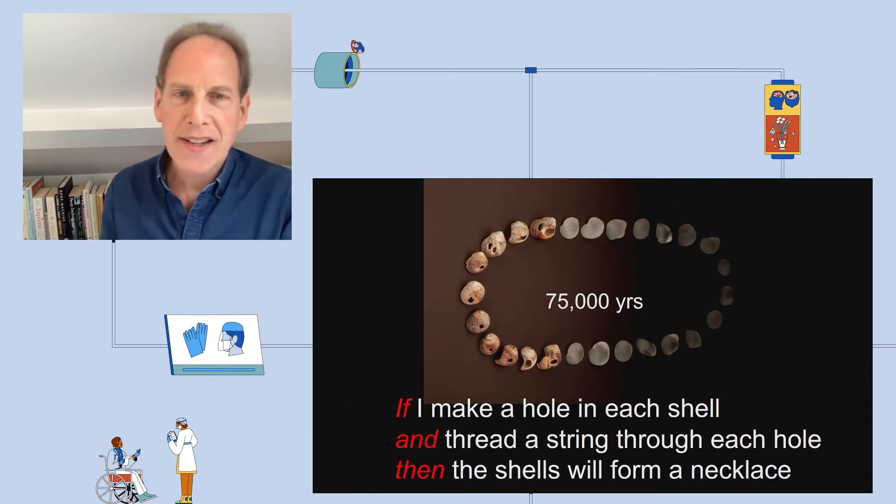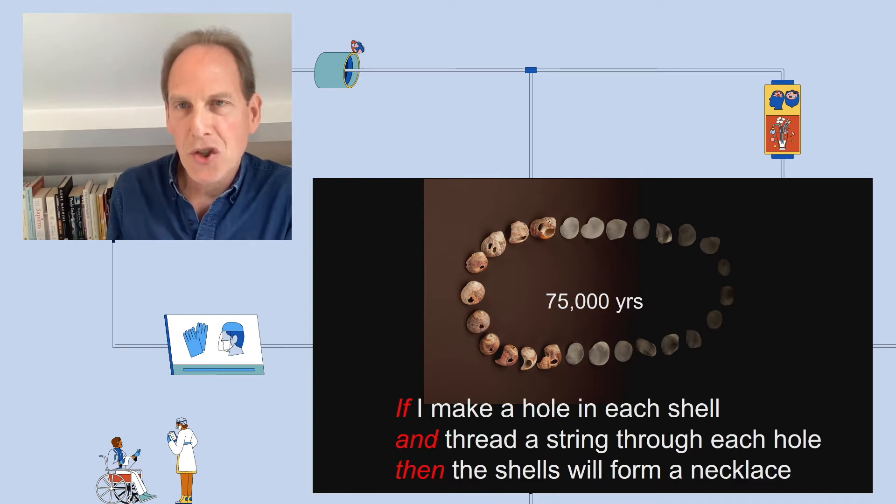We can infer the existence of the systemizing mechanism in the modern human brain because 75,000 years ago we see the first jewelry. And imagine the thought of the ancestor who made it: if I make a hole in each shell and thread a string through each hole, then the shells will form a necklace. So it's if-and-then.